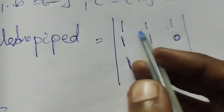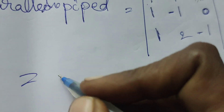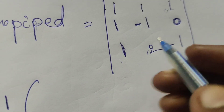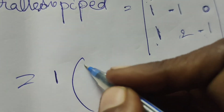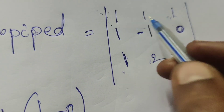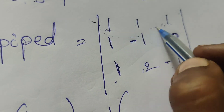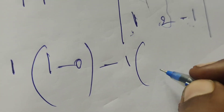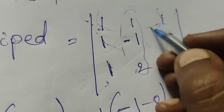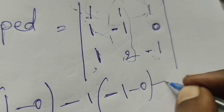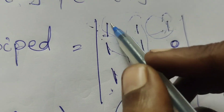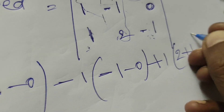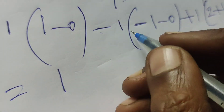Now find the determinant. Expanding along the first row: first element, 1, times the 2×2 minor using ad minus bc: (-1)(−1) minus (0)(2) = 1 minus 0 = 1. Minus the second element, 1, times its minor: (1)(−1) minus (0)(1) = -1 minus 0 = -1. Plus the third element, 1, times its minor using ad minus bc: (1)(2) minus (-1)(1) = 2 minus (-1) = plus one.